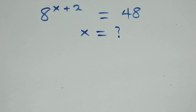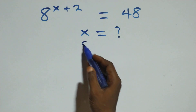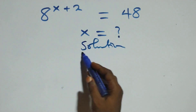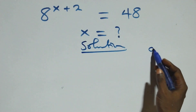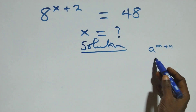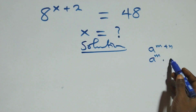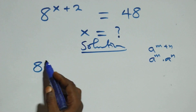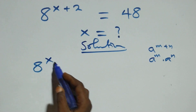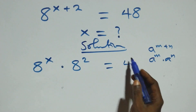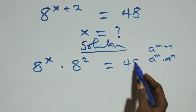Hello, you are welcome. How to solve this nice exponential equation. From what we have here, this follows the law: a raised to power m plus n is the same thing as a raised to power m times a raised to power n. So this is the same thing as h raised to power x times h squared equals 48.